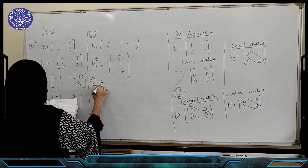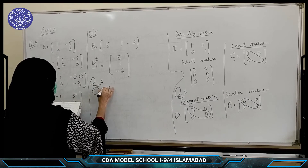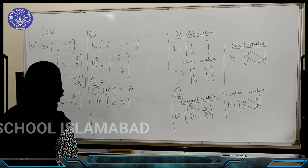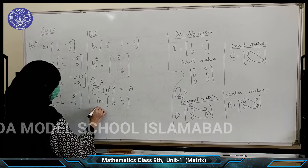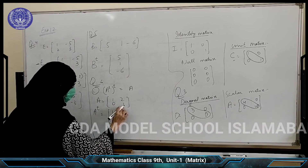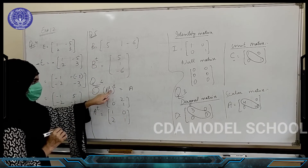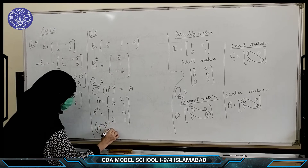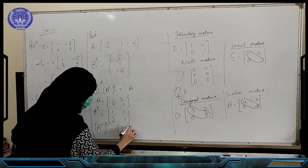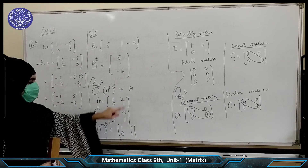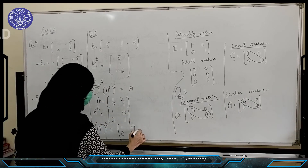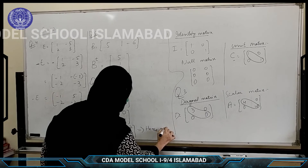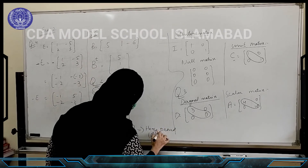Question number 6, part A. We need to prove that (A^T)^T equals A. Here A is the matrix 1, 0, 2, 1. We first take the transpose of A: the first row converts into a column and the second row also converts into a column, giving A^T. Then we take the transpose of A^T again: this row converts into a column and this row also converts into a column, giving (A^T)^T. Hence (A^T)^T equals A.